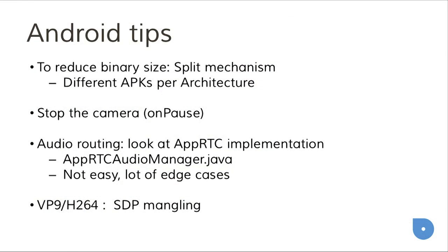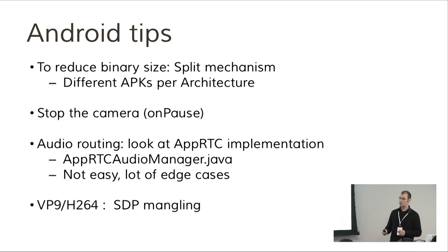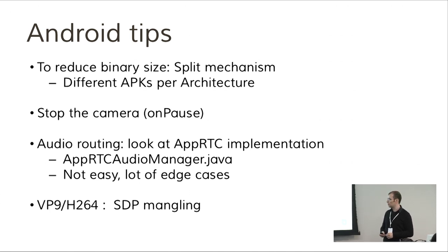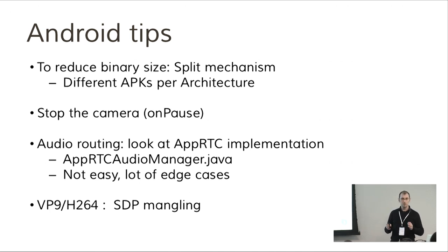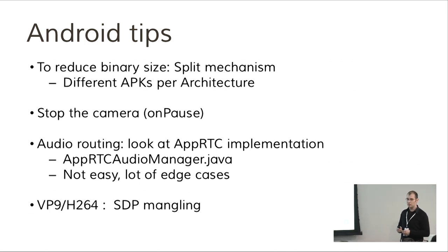Audio routing is something that seems easy but is not — handling headsets and Bluetooth headsets has many edge cases. If you look at the AppRTC sample code provided with WebRTC, it's quite complex there. It's better to look at an existing implementation and do something similar. Finally, if you want to try new codecs like VP9 or H.264, by default WebRTC uses VP8. There is no easy way to select them — you have to modify the SDP and reorder the codecs. That may be easier in the future, but for now it's a bit complicated.